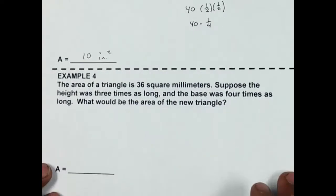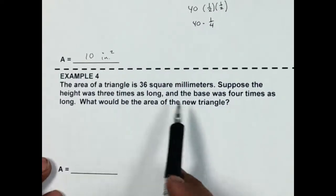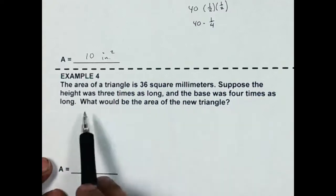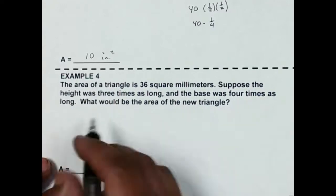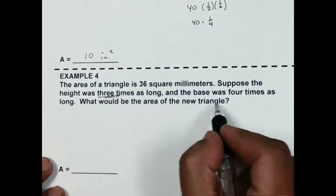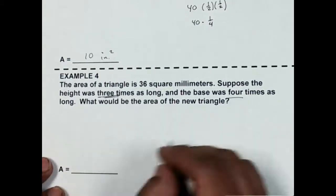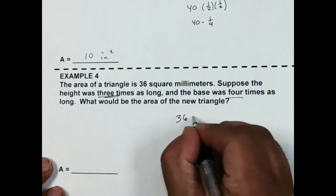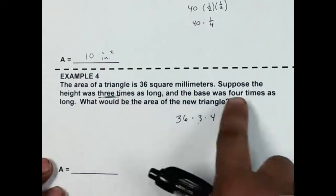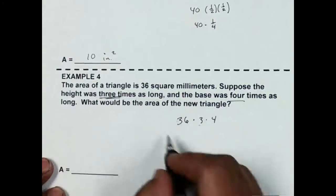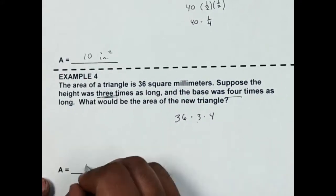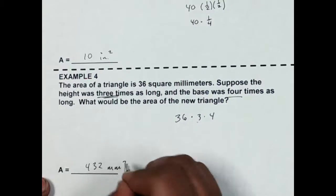The next one: the area of a triangle is 36 square millimeters. Suppose the height was 3 times as long and the base was 4 times as long. What would be the area of the new triangle? In this case, I'm changing the height by a factor of 3 and the base by a factor of 4, so I'm going to do 36 times 3 times 4, since each one has its own scale factor. That comes out to be 432 millimeters squared.